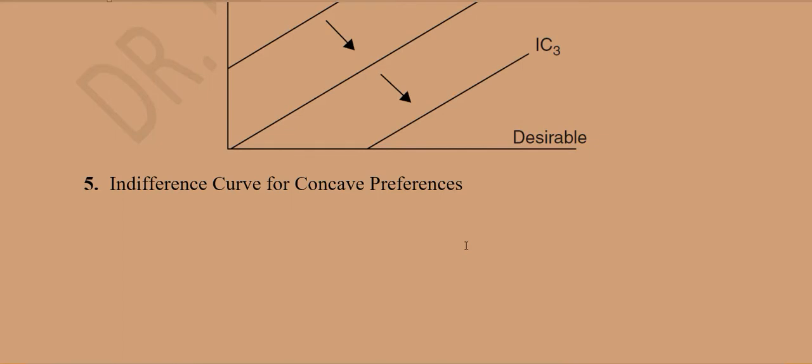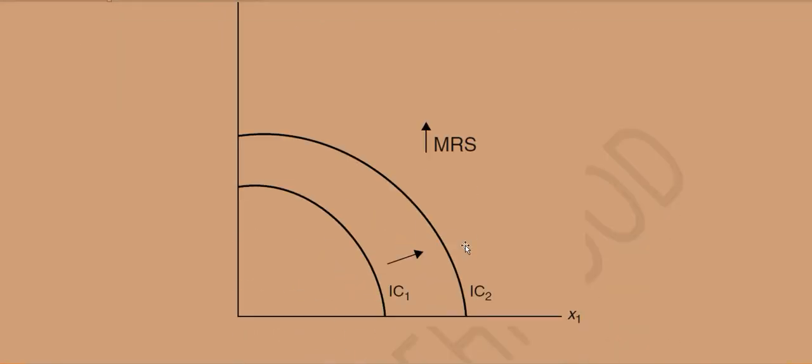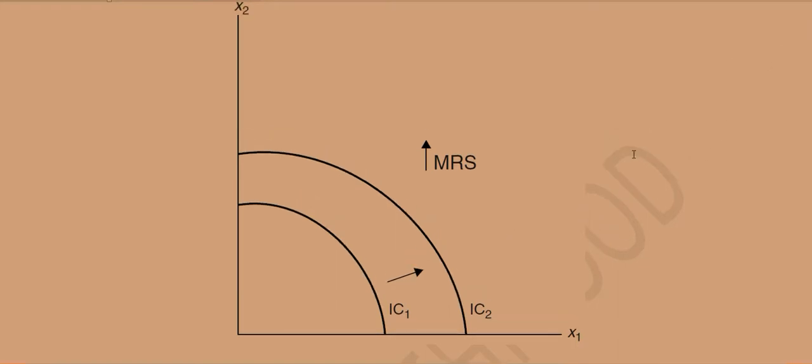And then we have the indifference curve for concave preferences, where both of the goods are bad or undesirable goods. Therefore, the shape of the indifference curve has been reversed. Previously, it was a convex curve, and now it is a concave curve. In this case, the MRS is increasing, whereas it was decreasing in case of the first case where we have two goods on the X and Y axis.